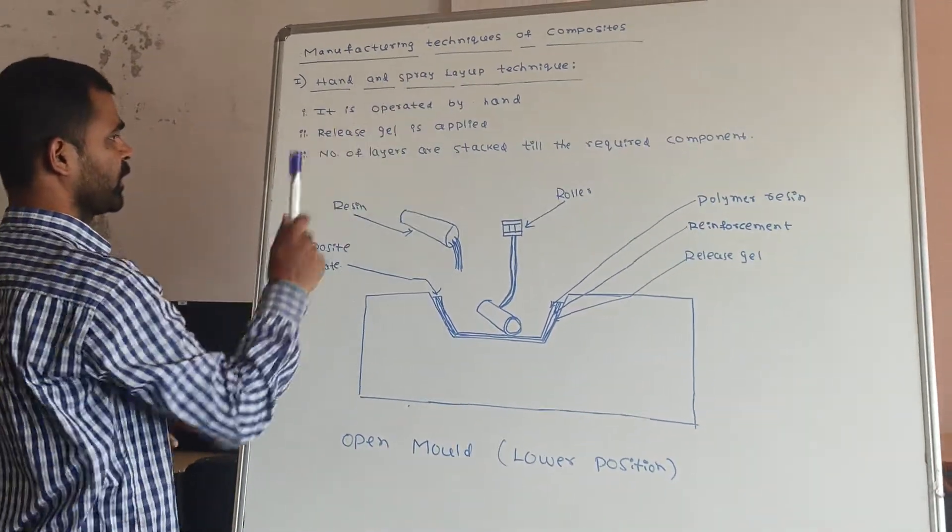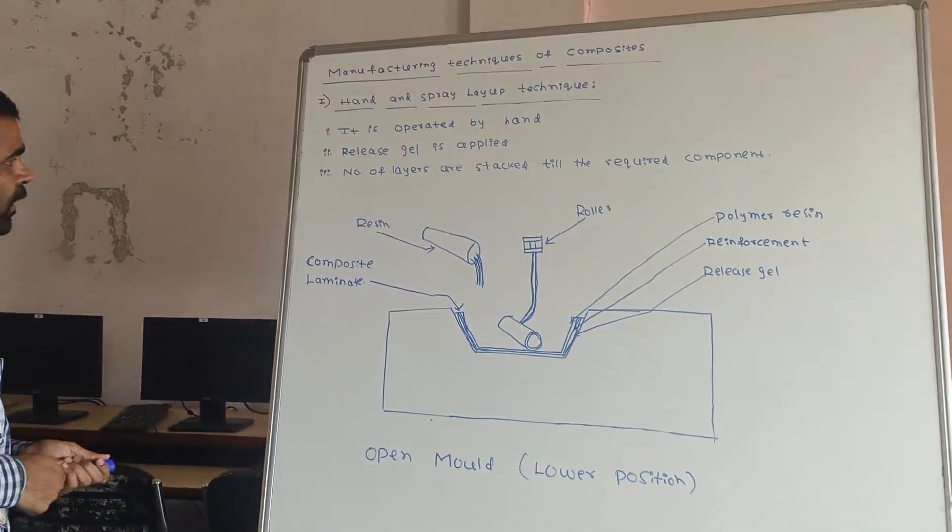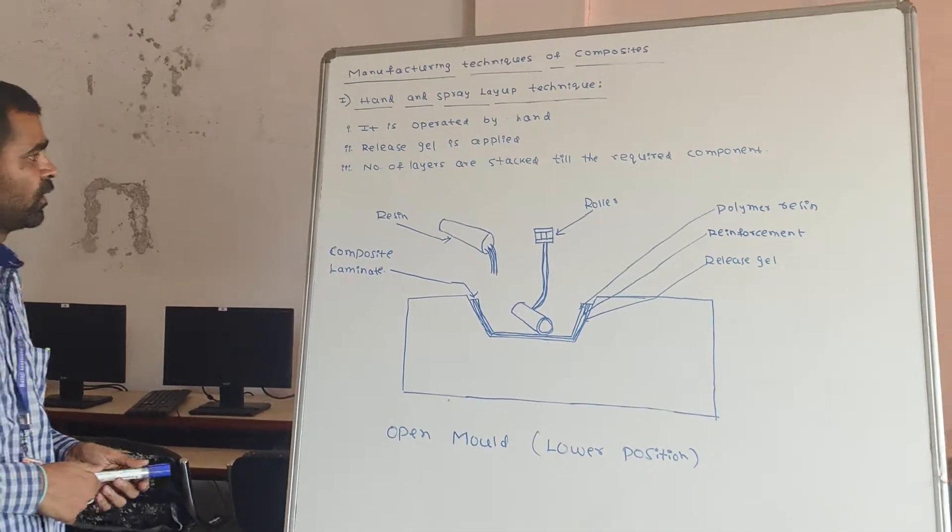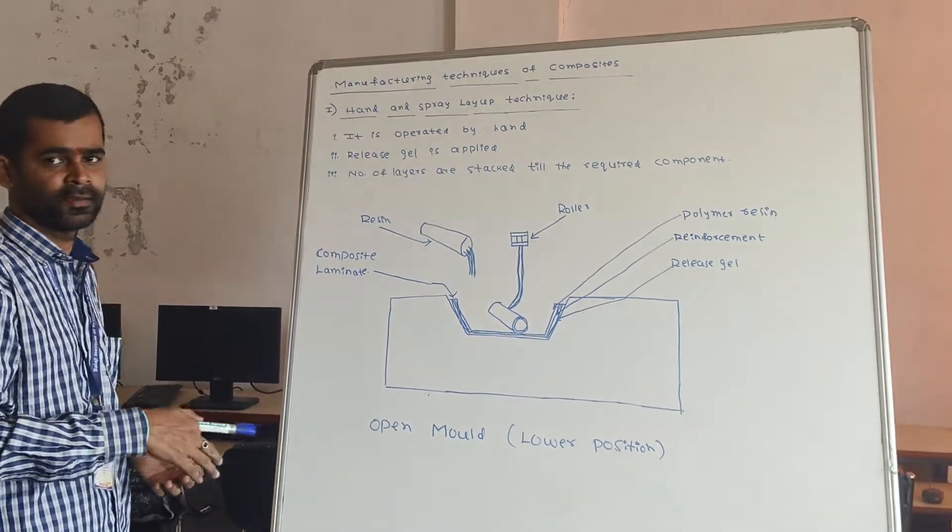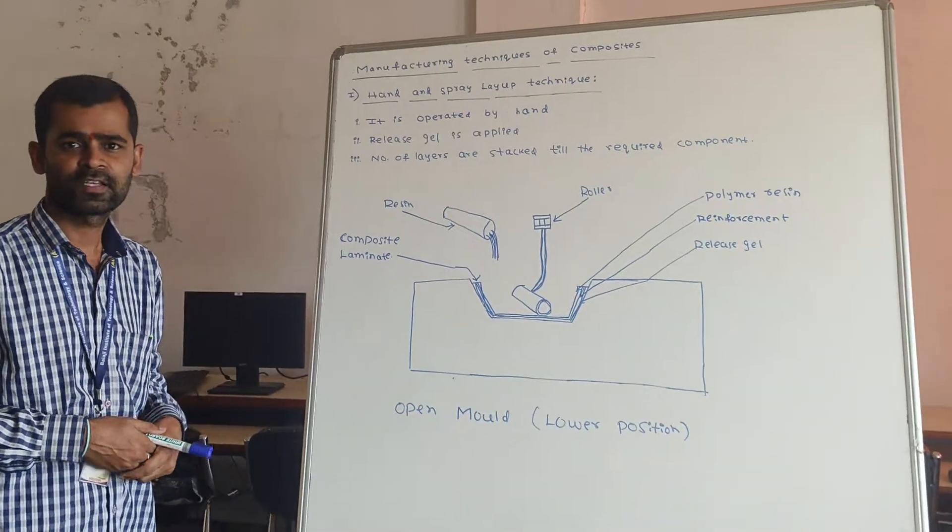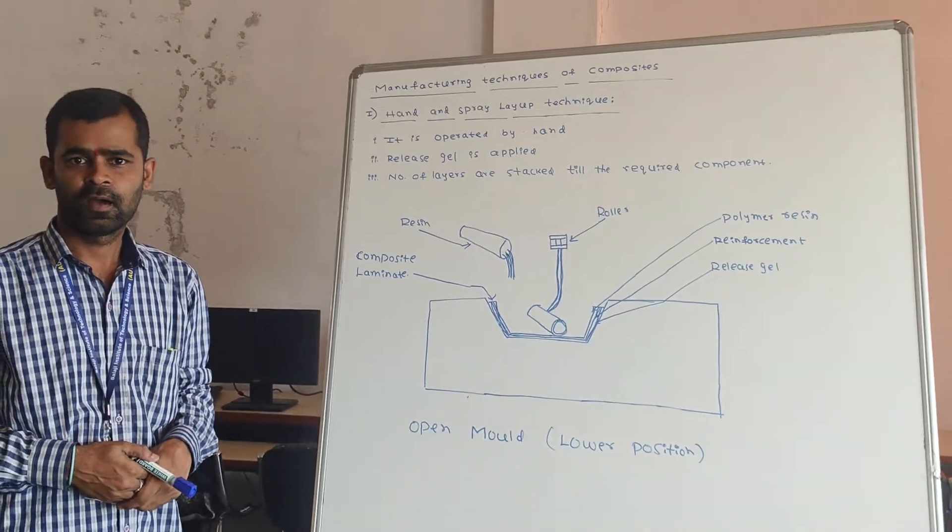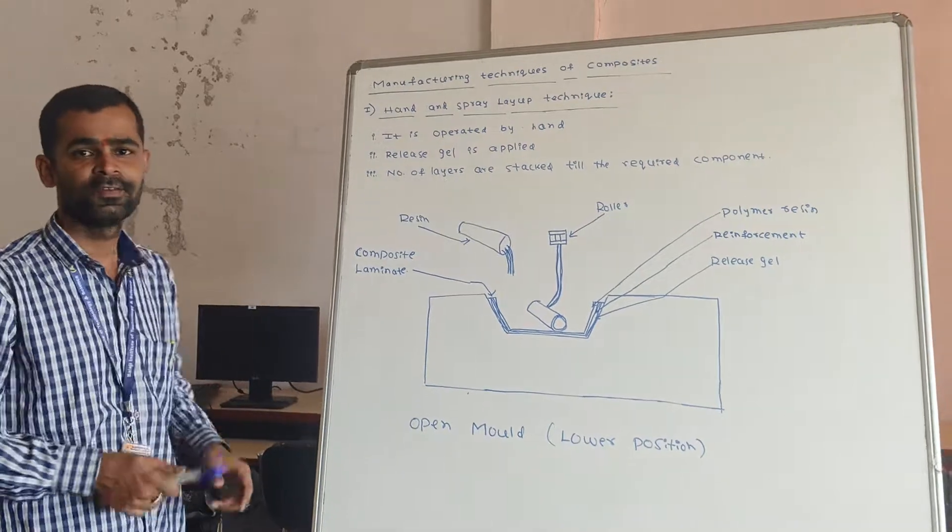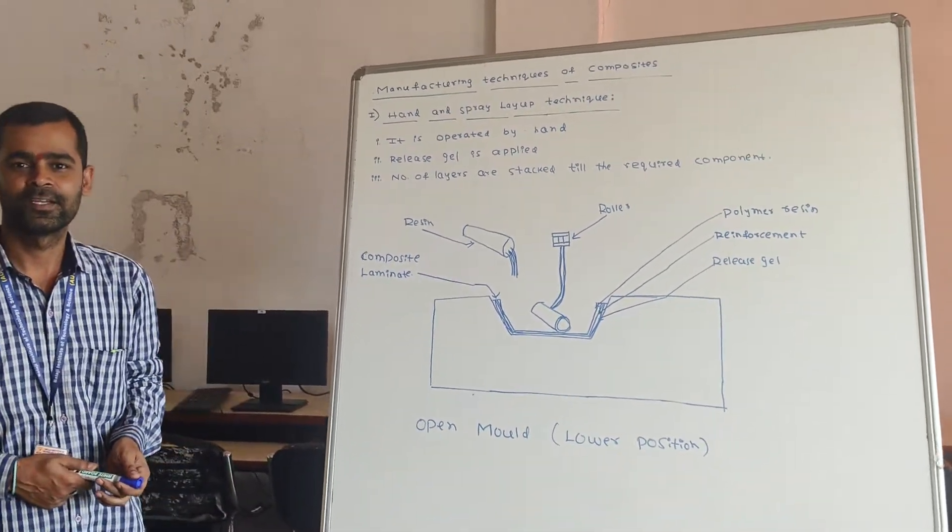Hand and spray layer technique is one method. And prepax, filament winding, and there are other methods of manufacturing of components. So today we will see hand and spray layer technique.